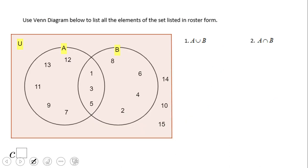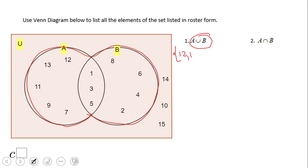We can also use Venn diagrams for doing all these types of operations of sets. In fact, sometimes it's even easier — most of the time. So you see this one: A union B — that will be all these elements together. So that will be 12, 13, 11, 9, 7, 1, 3, 5, 8, 6, 4, and 2. That is the union of A and B.